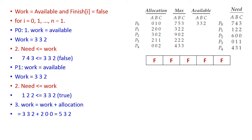Now let us solve this problem. Step 1 — initialization: Work equals Available, and Finish[i] equals false. Available equals [3, 3, 2] — type A = 3, type B = 3, type C = 2. That is assigned to Work. Finish[i] equals false for P0, P1, P2, P3, and P4 — all processes are not yet finished.